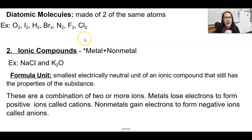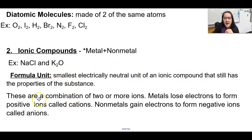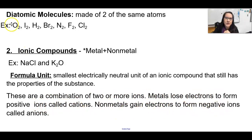The second type of compound are ionic compounds, which are a metal combined with a non-metal. For example, sodium and chlorine together make sodium chloride, which is table salt — sodium is an alkali metal, chlorine is a halogen. And potassium oxide is made up of an alkali metal and oxygen gas. A formula unit is used to describe ionic compounds; it is the smallest electrically neutral unit of an ionic compound that still has the properties of the substance. These are a combination of two or more ions. Metals lose electrons to form positive ions called cations; non-metals gain electrons to form negative ions called anions.